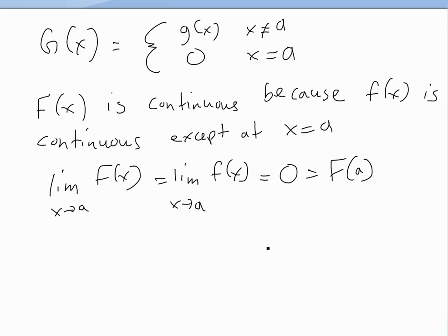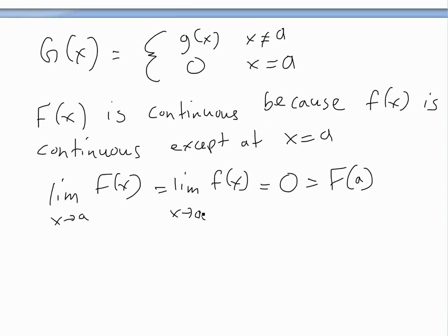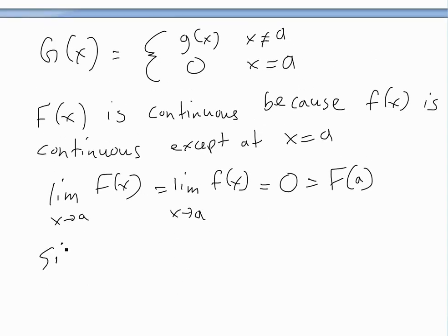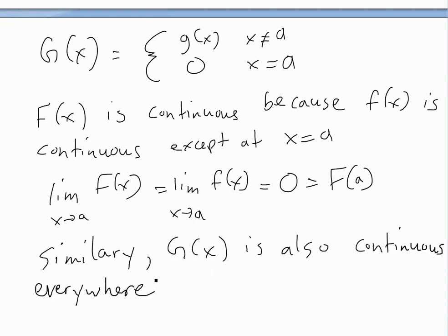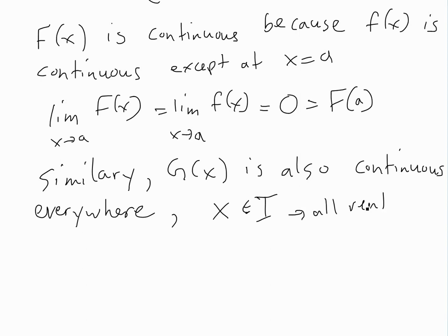The limit of capital F(x) exists everywhere, so there are no breaks in the function — it is continuous. Similarly, capital G(x) is also continuous everywhere, continuous on all real numbers. Now if we let x be an element of all real numbers where x is greater than a, then capital F and capital G are continuous on the closed interval [a, x].